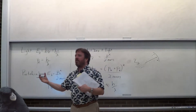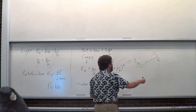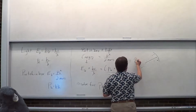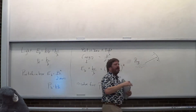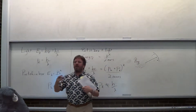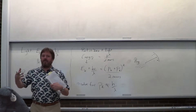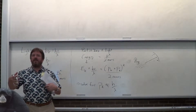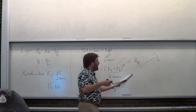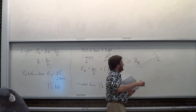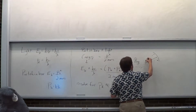You get different diffraction orders. Why do light spots show up when you do a diffraction of a laser off a grating? You get bright spots with empty space in between. Why do I get bright spots?